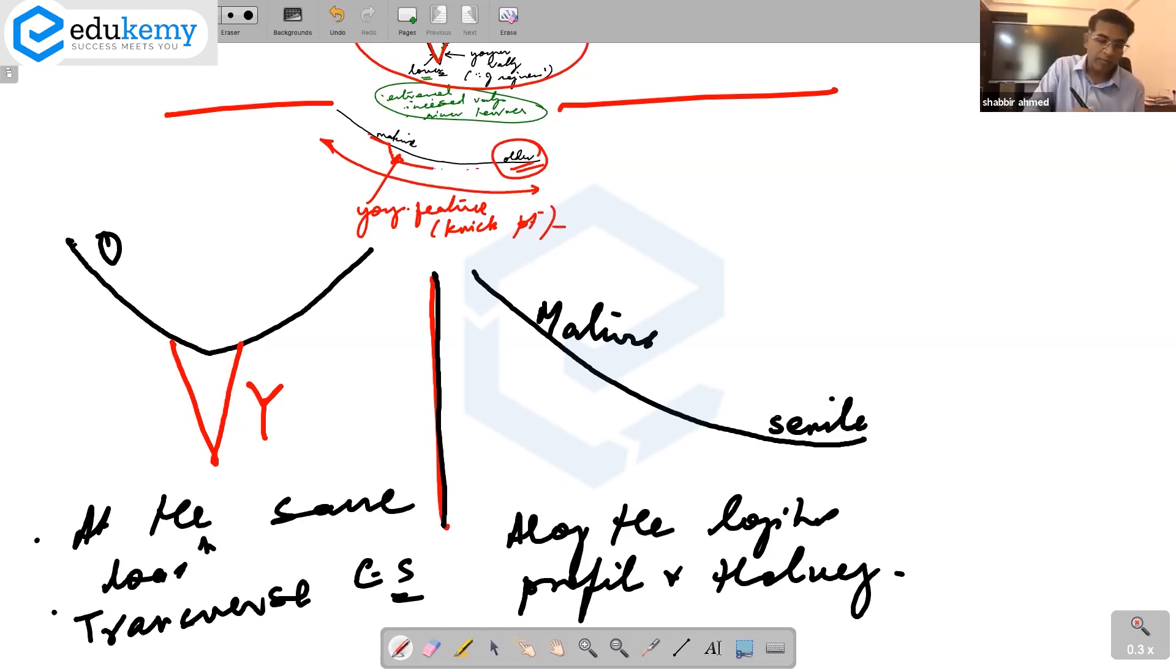Now, what I have is, because of erosion, rejuvenation, there is a nick point developing here. And this nick point is a youthful feature, which is above the senile landscape.